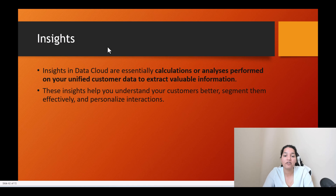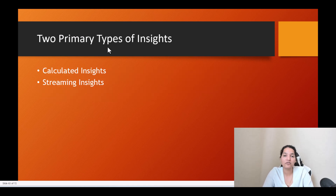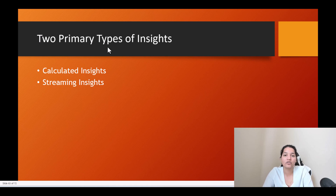There are two types of insights you can create: calculated insights and streaming insights. Calculated insights are the insights you perform on batch data — large amounts of data — to create key metrics like lifetime value, affinity score, or RFM score. Streaming insights act on real-time data; if you want to create analysis on real-time data, that is streaming insights.